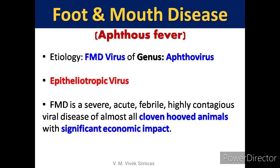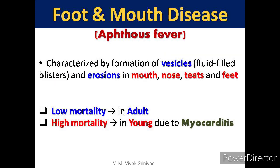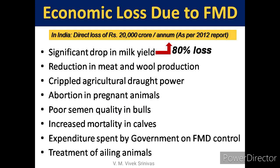This infection causes a severe, acute, febrile, highly contagious viral disease of almost all cloven-hooved animals with significant economic impact. It is characterized by formation of vesicles — fluid-filled blisters — which subsequently erode to form ulcers in the mouth, nose, teats, and feet region. The infection causes low mortality in adult animals, but in young animals high mortality is noticed due to myocarditis. It is the most economically important livestock viral disease in India and worldwide, with a direct loss of rupees 20,000 crore per annum recorded in India as per the 2012 report.